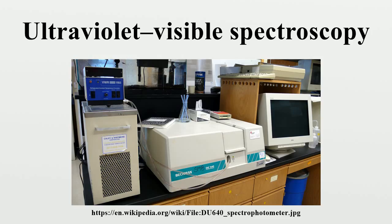The Beer-Lambert law has implicit assumptions that must be met experimentally for it to apply; otherwise there is a possibility of deviations from the law. For instance, the chemical makeup and physical environment of the sample can alter its extinction coefficient. The chemical and physical conditions of a test sample therefore must match reference measurements for conclusions to be valid. Regarding spectral bandwidth, monochromaticity of light incident on the sample cell is the width of the triangle at one-half of the peak intensity. A given spectrometer has a spectral bandwidth that characterizes how monochromatic the light is. It is important to have a monochromatic source of radiation for analysis of the sample. If this bandwidth is comparable to the width of the absorption features, then the measured extinction coefficient will be altered.